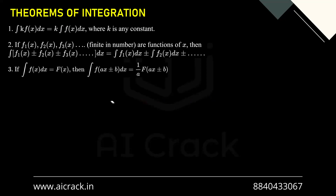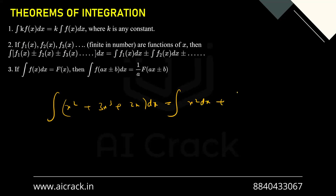The second theorem is: if f₁(x), f₂(x), f₃(x) are a finite number of functions of x, then integral of f₁(x) ± f₂(x) ± f₃(x) dx equals integral f₁(x) dx ± integral f₂(x) dx ± and so on. For example, integral of (x² + 3x³ + 2x) dx can be written as integral x² dx + integral 3x³ dx + integral 2x dx.